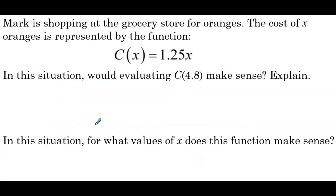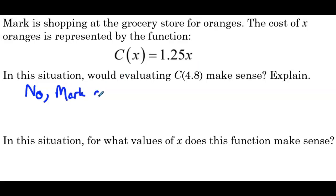Would evaluating c of 4.8 make sense? The answer again is no. Our reasoning: 4.8 means that he's buying four whole oranges and 0.8 of another, which doesn't make sense. He's either going to buy a whole orange or he's not going to buy it. Mark cannot buy part of an orange.